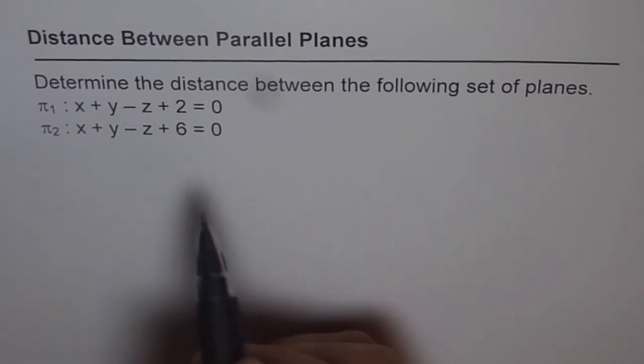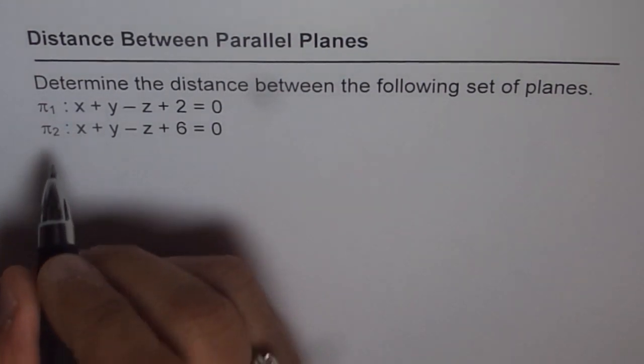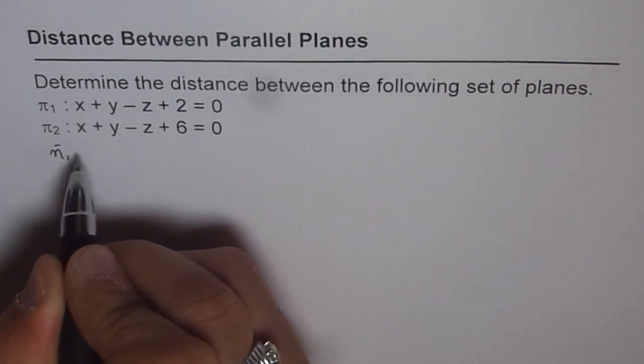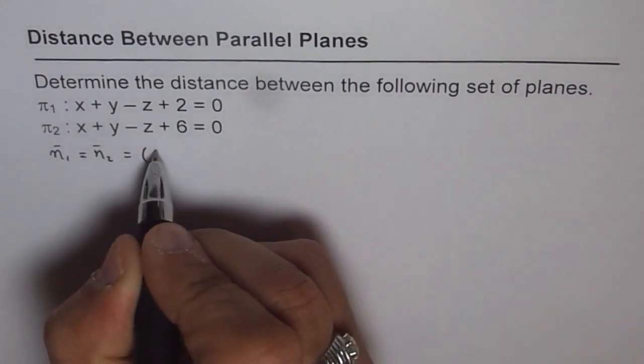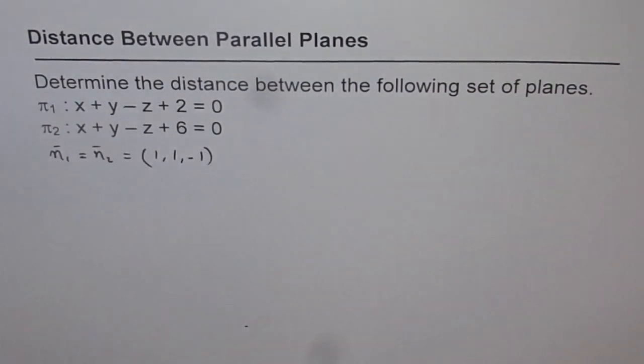Clearly, the two planes are parallel, since their normals, which are n1 and n2, are equal. And they are equal to 1, 1 and minus 1. So these two planes are parallel.